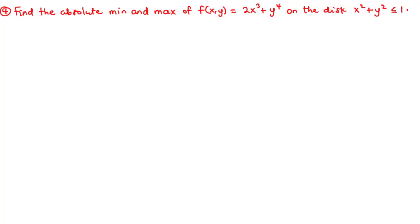Let's try example 4. In this example, we are going to find the absolute minimum and maximum of the function f(x,y) on the disk given by x squared plus y squared is less than or equal to 1.